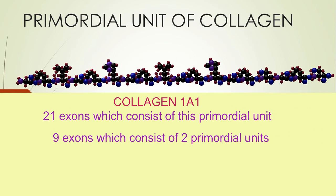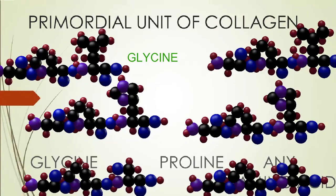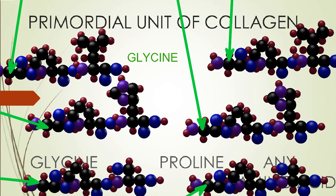And so this gene for a very important protein is the repetition of primordial units. And primordial units in turn are repetitions of DNA codes for three amino acids: glycine, typically proline, and another amino acid, repeated over and over again.